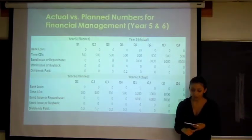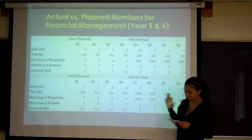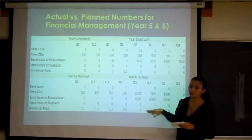Next, we're going to look at our stock issue or buyback. We did plan to issue stock. However, we had no actual number. But we were not able to due to the fact that we had low sales and low revenues.